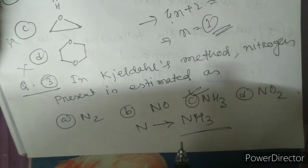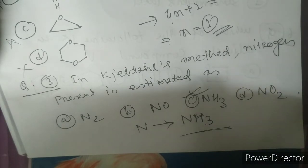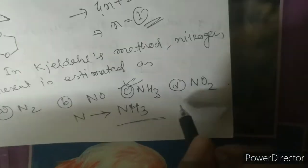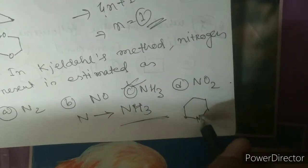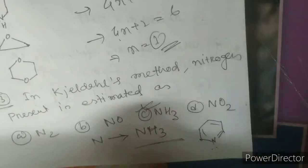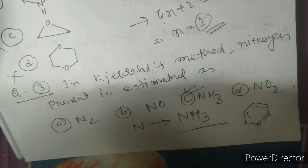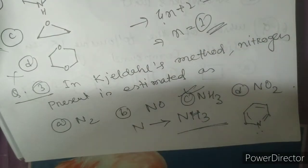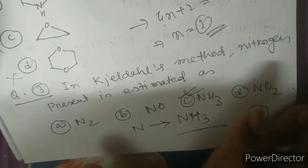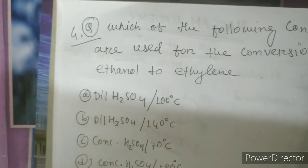Remember: Kjeldahl method — N is converted to NH3, H2SO4 is used. There are a few compounds where Kjeldahl's method is not applicable: if a nitro group is present, if an azo bond (N=N) is present, or if pyridine is present, Kjeldahl's method will not work. Many questions have come asking which compound is not applicable for Kjeldahl's method — look for nitro groups, azo bonds, or pyridine.